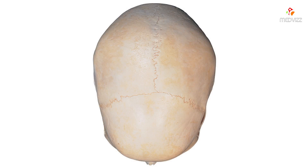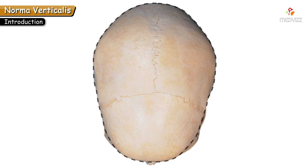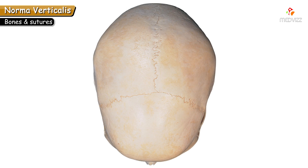Today we will learn about norma verticalis and norma occipitalis. The superior view of the skull is known as norma verticalis. The outline of this view appears to be ovoid in shape, which is relatively wider on the posterior aspect.